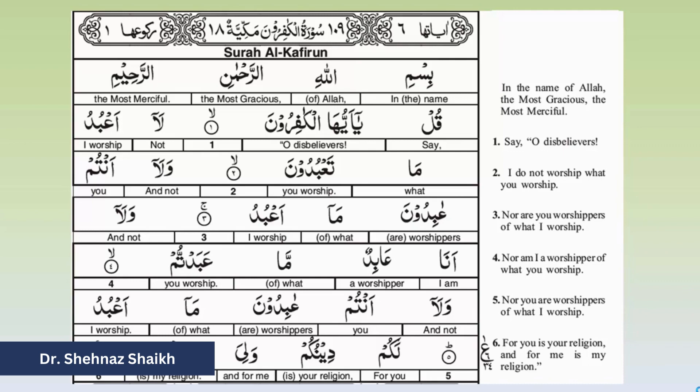The root Ayn, Ba, and Dal appears repeatedly throughout the surah. 'Aabudu' means 'I worship', and 'Ma' meaning 'what' is also repeated twice, helping the student remember it. Related forms include 'aabiduun' meaning 'worshippers' and 'aabid' meaning 'a worshipper'. 'Wa la antum aabidoona ma abudu' means 'nor are you worshippers of what I worship'. 'Lakum deenukum' means 'for you is your religion' and 'waliya deen' means 'and for me is my religion'.